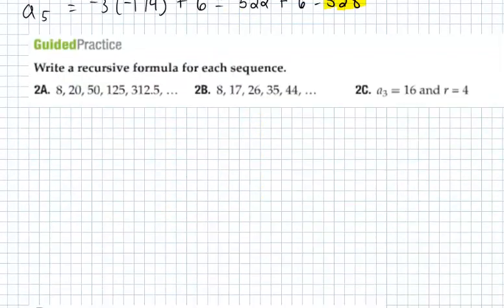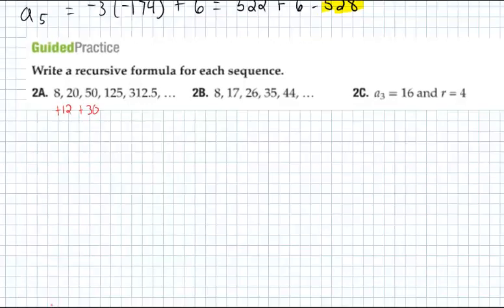If you want to write a recursive formula for each one of these sequences, we need to determine if it's going to be geometric or arithmetic. In this case, let's see if we have a common ratio. We obviously do not have a common difference because we're adding 12, adding 30, adding 75. So clearly there is no common difference, which means more likely than not we have a common ratio.